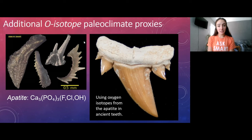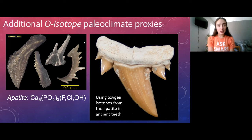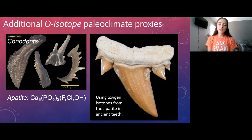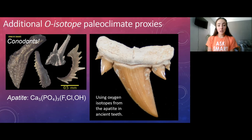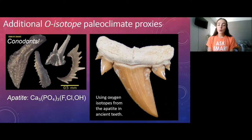Another material we can measure oxygen isotopes from — not calcium carbonate — is the mineral apatite. You can find apatite in your own teeth and bones. In the rock record, we have fossilized teeth such as conodonts, which are made of apatite — a phosphate mineral that contains oxygen. We can also use shark teeth for the same purpose, since they're also apatite, and both organisms lived in marine or freshwater settings.